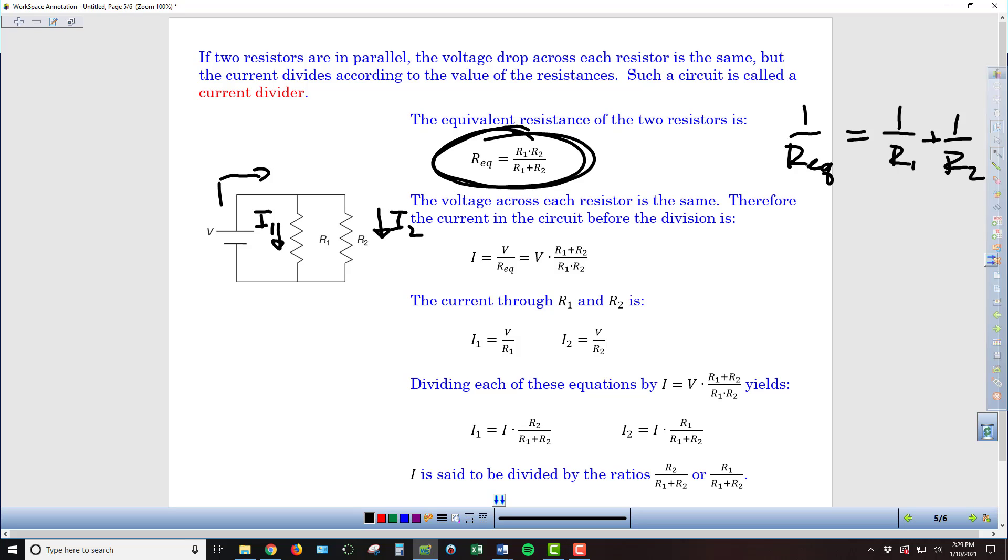So if we want the voltage, we know that the voltage across each of these resistors is the same. So the potential all along this part of the circuit is the same, and the potential along the bottom of the circuit is all the same. So the voltage drop across those resistors is the same.